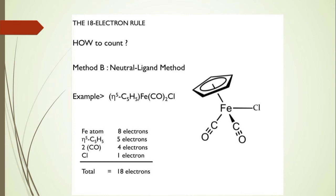The next example using the neutral atom method is Fe(η⁵-Cp)(CO)₂Cl. The central atom iron has 8 electrons (3d⁶4s²) in its outer shell. The η⁵-cyclopentadienyl ligand donates 5 electrons, each CO donates 2 electrons (totaling 4 electrons), and Cl in the neutral atom method donates 1 electron. Totally it reaches 18 electrons, so the complex is stable according to the 18-electron rule.